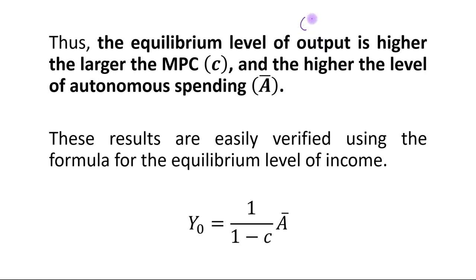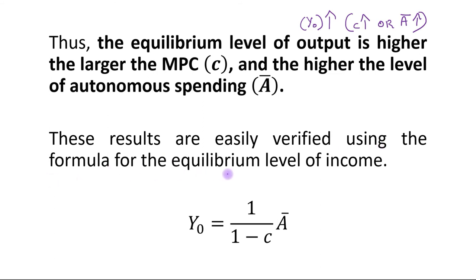Thus, the equilibrium level of output Y0 is higher the larger the MPC and the higher the level of autonomous spending. These results are easily verified using the formula: if MPC is higher, equilibrium output is higher, and if autonomous spending is higher, equilibrium output is also higher.